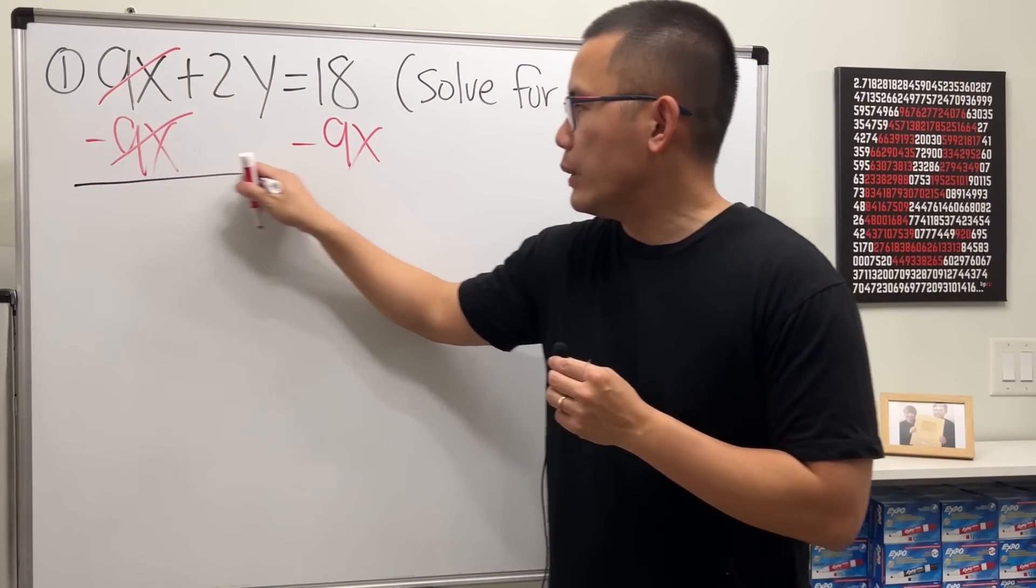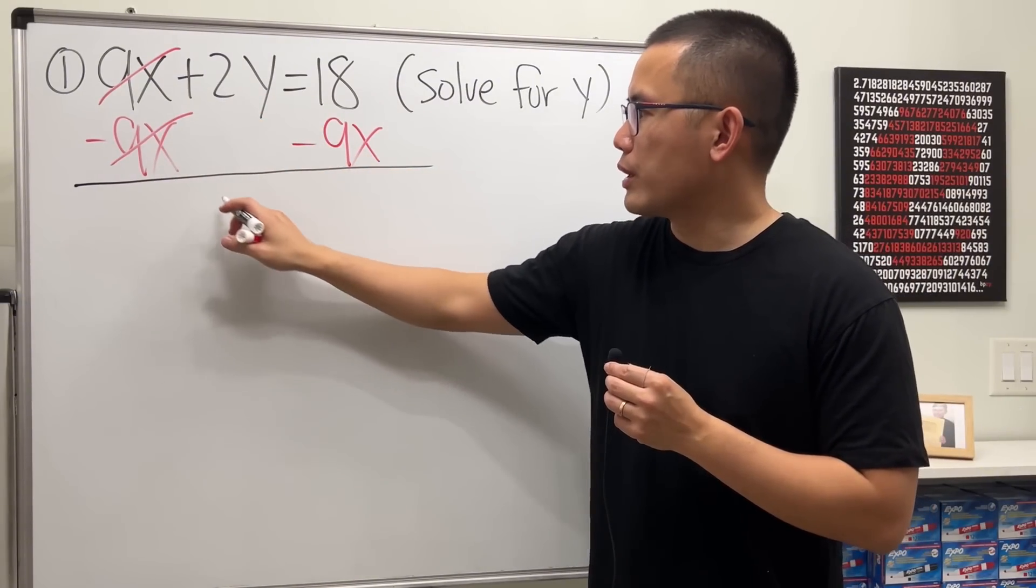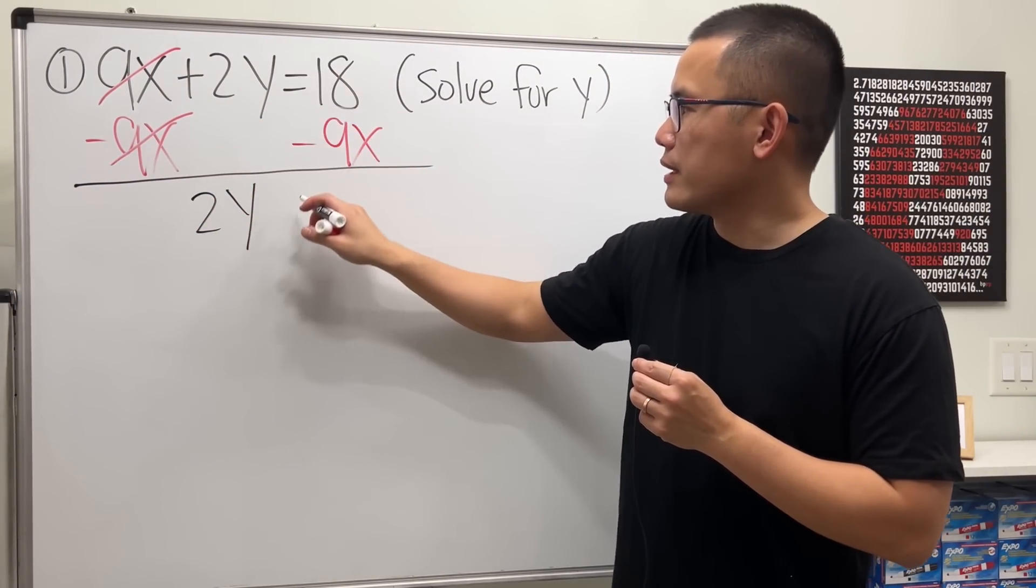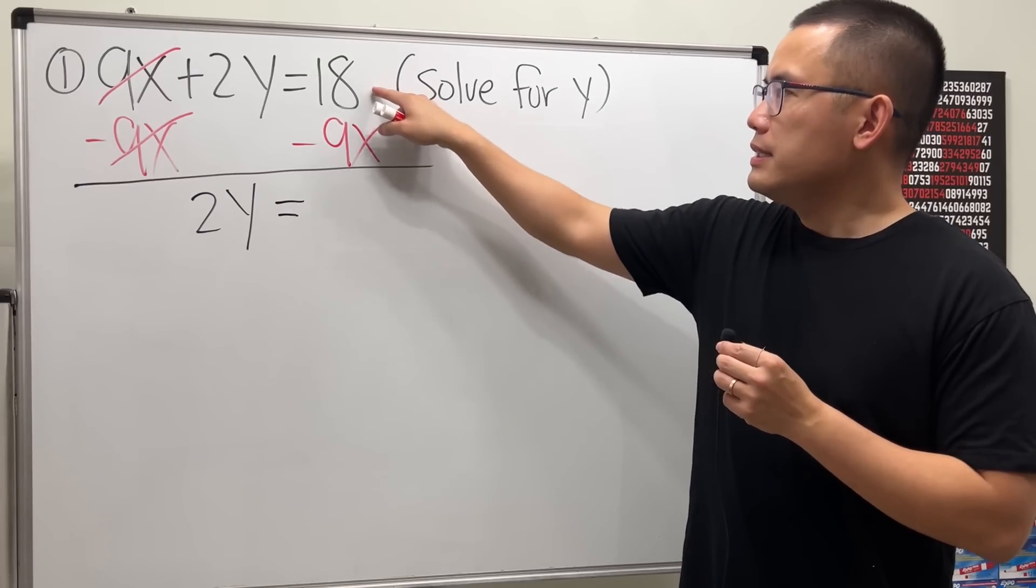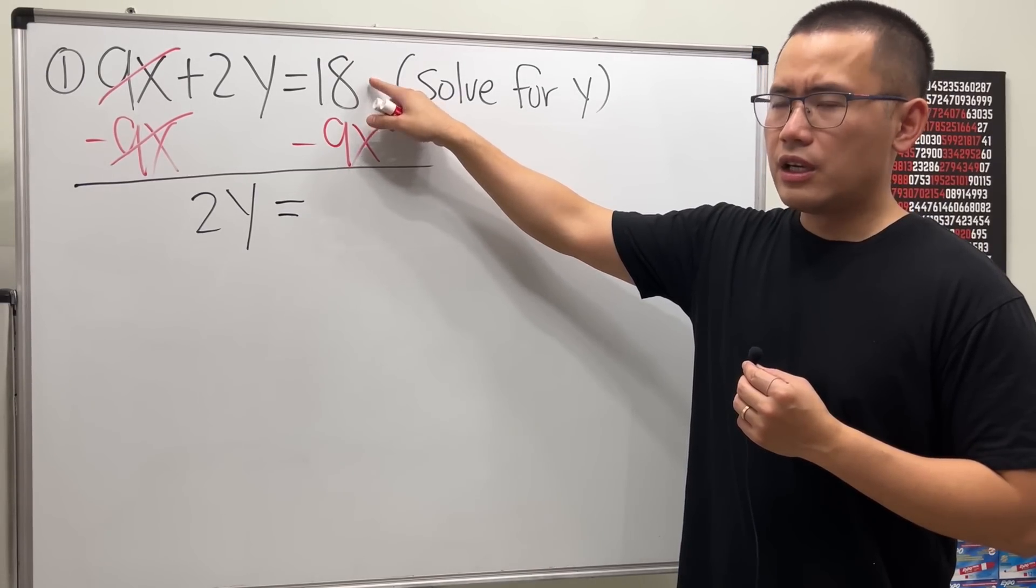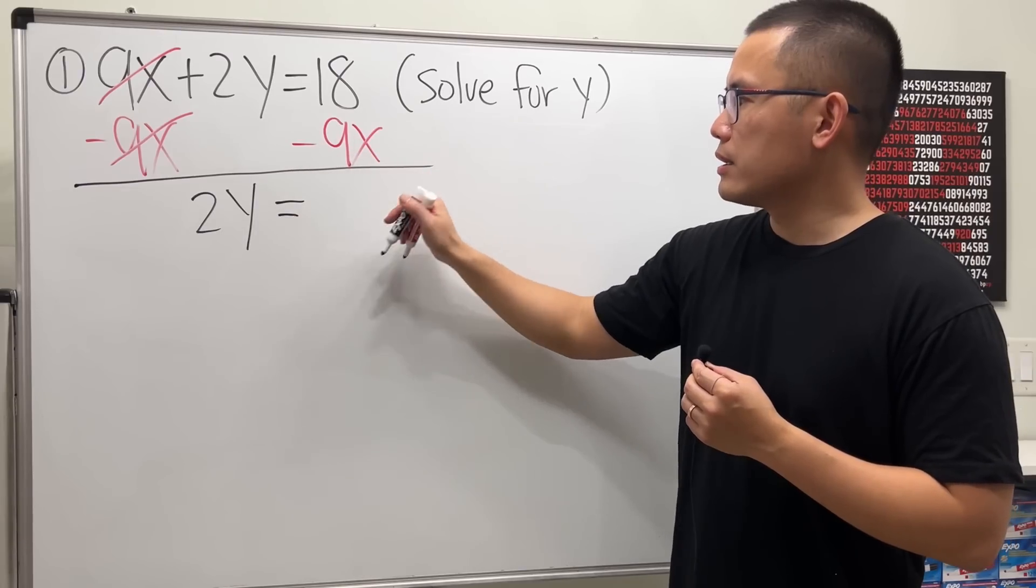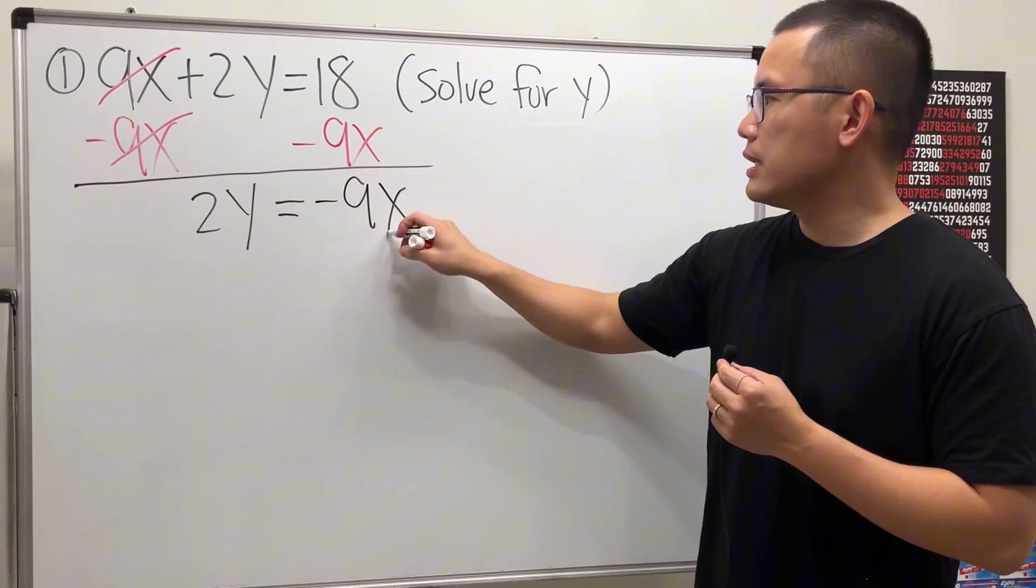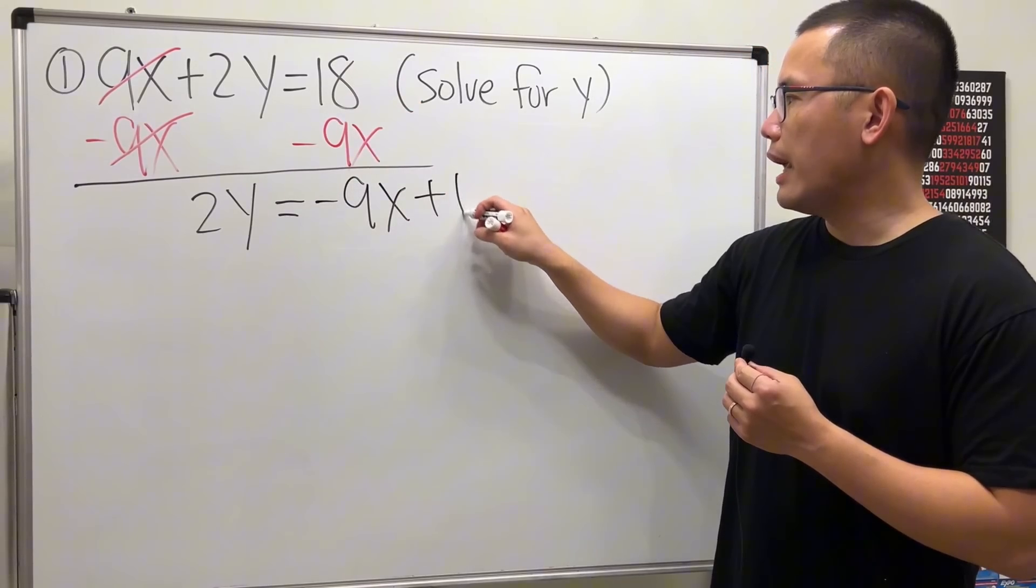This and that will cancel, and then we will get this right here is 2y. Bring down the equal sign. This and that cannot be combined because the 18 does not have the x. So just write it down. And let's write down the negative 9x first, and then plus 18.